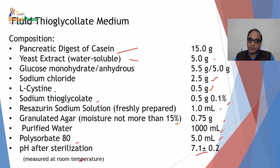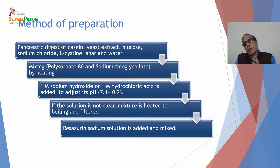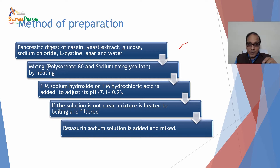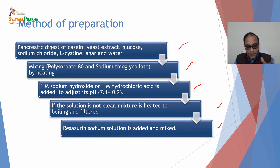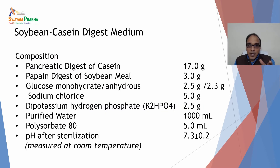Remember the composition. To prepare fluid thioglycollate medium: Step 1 — take pancreatic digest of casein, yeast extract, glucose, sodium chloride, L-cysteine, agar, and water. Step 2 — mixing is done with polysorbate 80 and sodium thioglycollate by heating. Step 3 — 1M sodium hydroxide or 1M hydrochloric acid is added to adjust pH to 7.1 ± 0.2 at room temperature. If the solution is not clear, the mixture is heated to boiling, filtered, and then resazurin sodium solution is added and mixed.